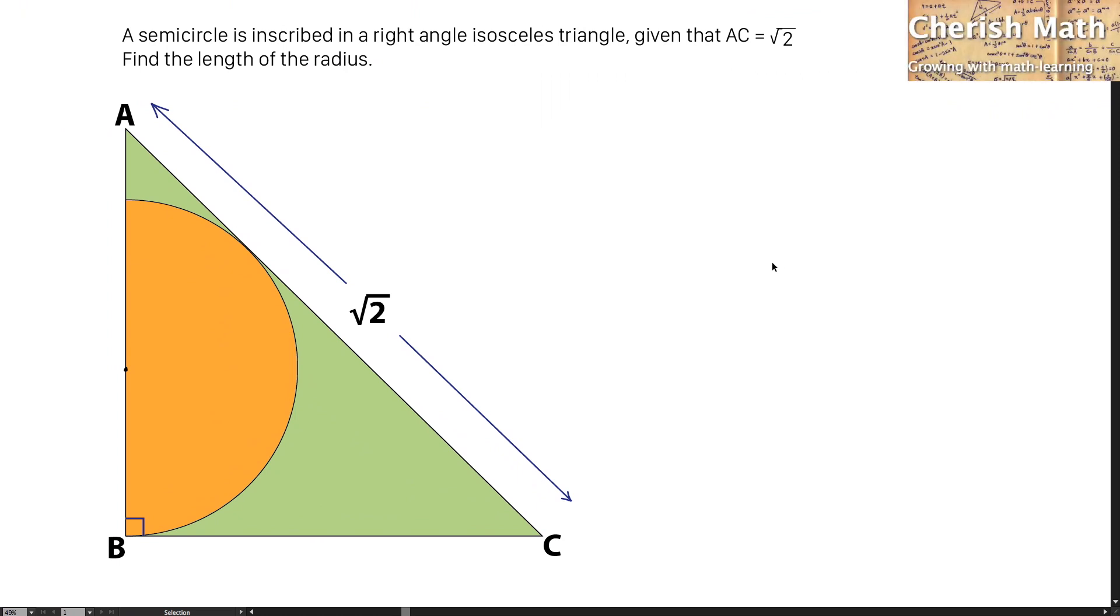Say hi from Cherish Math. This is the question. A semicircle is inscribed in a right-angled isosceles triangle. Given that AC is equal to the square root of 2, find the length of the radius.